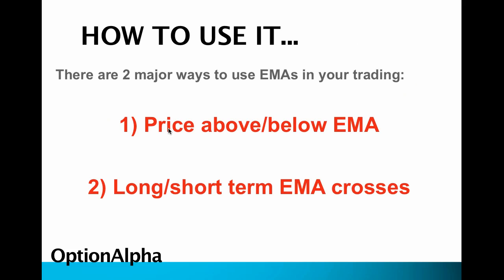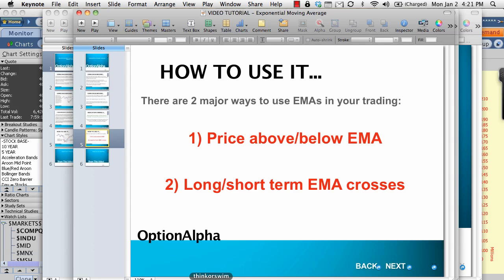How do we use Exponential Moving Averages? There are two major ways, just like simple moving averages. The first way is by a pure price movement above or below the Exponential Moving Average. The second way is with a long or short-term Exponential Moving Average cross. Let's look at both of these on a chart.